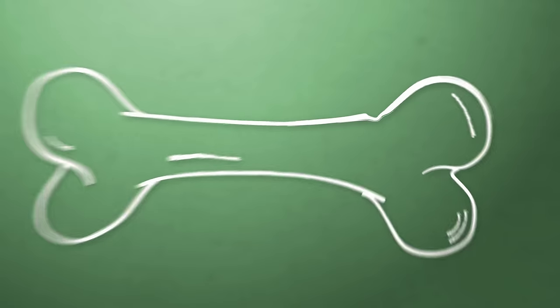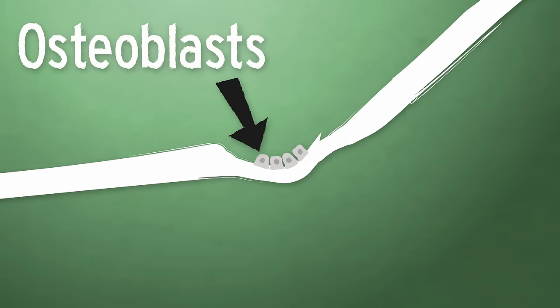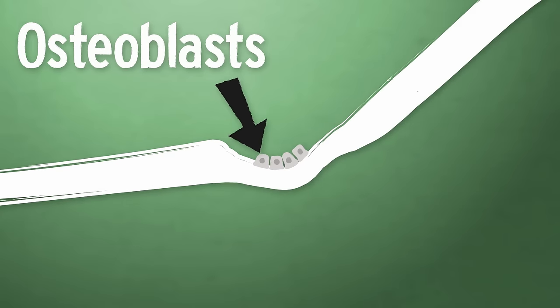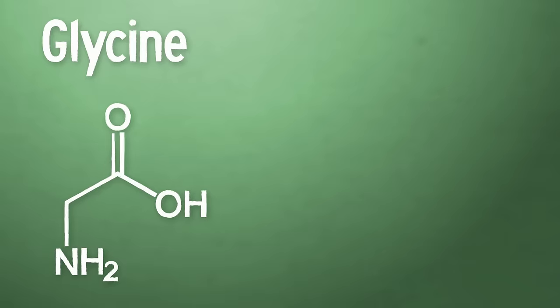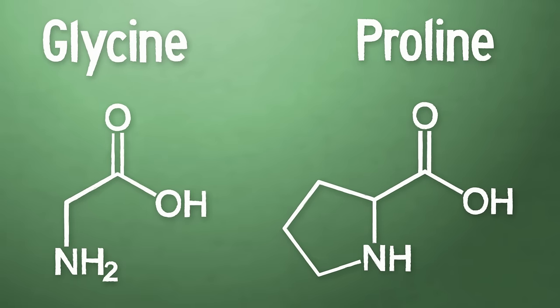Let's start off by zooming in. Your body builds bone tissue with the help of specialized cells called osteoblasts. They work together, forming a tight-fit layer over areas where bone needs to grow or be repaired. They secrete a particular combination of amino acids, primarily glycine and proline. These amino acids are chemical compounds that are the building blocks of proteins.